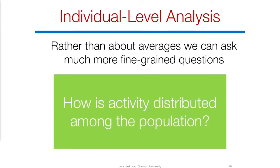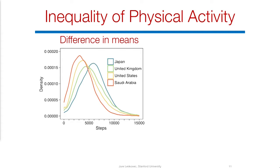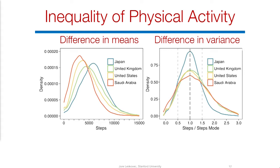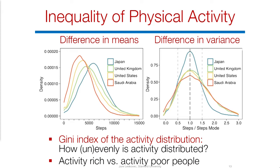We don't only have to work with population averages — we can ask much more nuanced questions, like how is activity distributed among the population of a given country. For example, looking at the distribution of steps per day for three countries: Japan as a very active country is toward the right, while Saudi Arabia and the United States as very inactive countries are to the left. When you align these distributions at their mode, you see that as activity drops, the distribution widens out — narrow for Japan, very wide for Saudi Arabia and the United States.